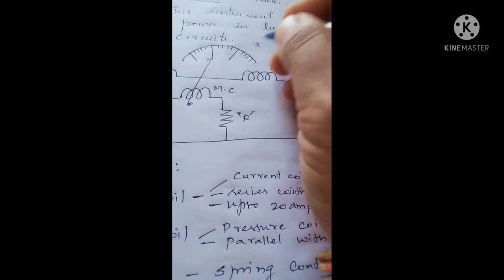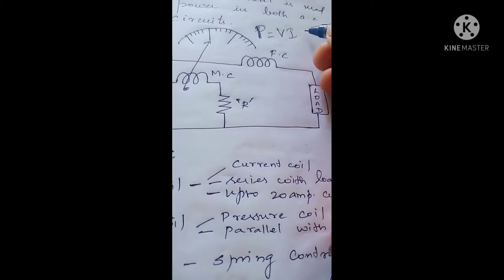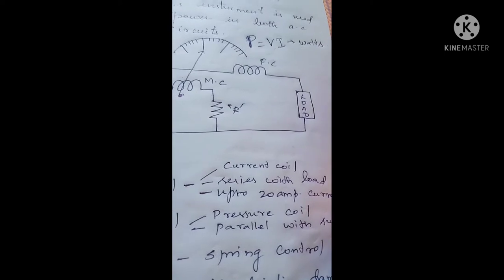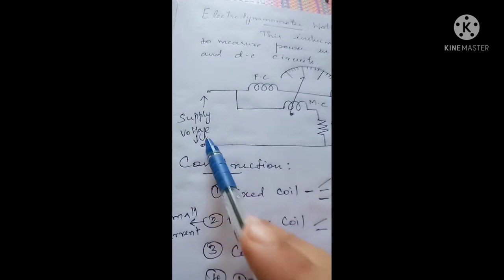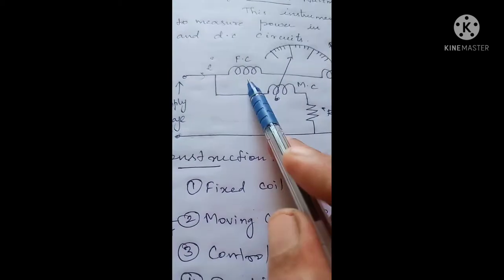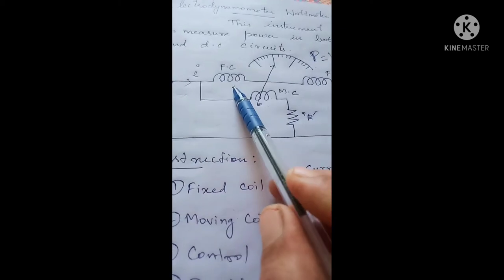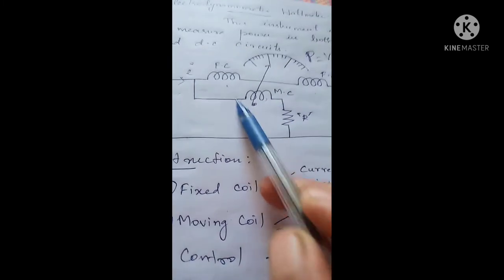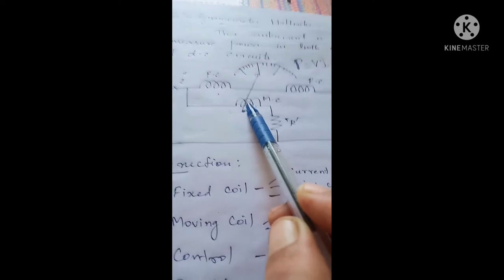Power is equal to P = V × I and is measured in watts. Here we are providing input supply voltage, and based on this supply voltage there occurs current flow through both the fixed coil and the moving coil. Due to the magnetic field developed by the fixed coil, the moving system changes its position.